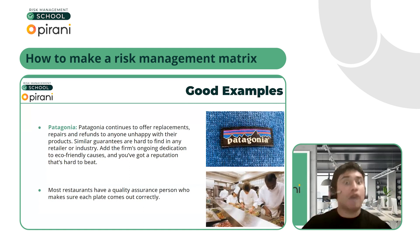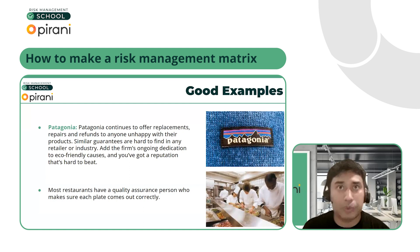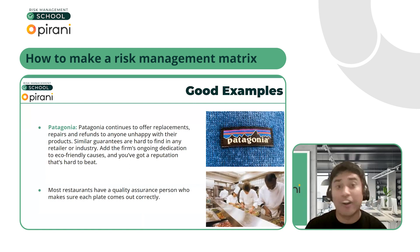Another good example of risk management that a lot of restaurants implement — or at least should — is having a quality assurance person on their line, making sure that every dish, once it's finished, is cleaned up, made correctly, and going out to the correct person. I used to work in the restaurant industry, and you want this person to be your best friend because you want to make sure nobody's spitting in your food.